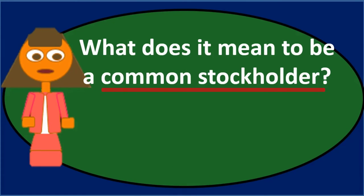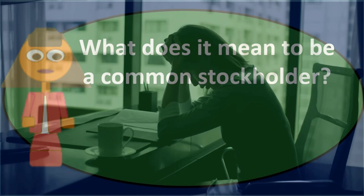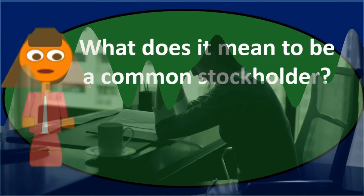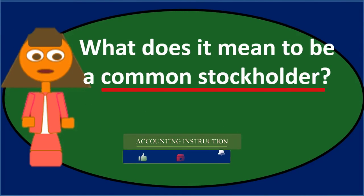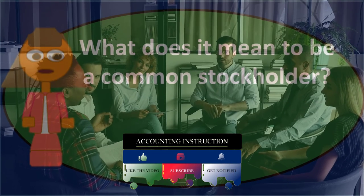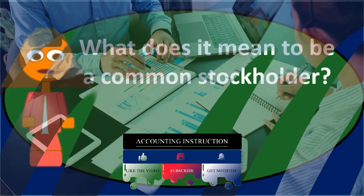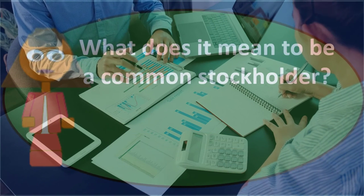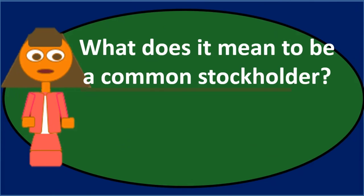We also have rights in terms of liquidation. If the corporation closes for whatever reason, we don't have much control if we don't have much stock. We can give influence through voting, but if the board of directors and management decide to liquidate the company, we have the right to an equal distribution after they sell the assets and pay off the liabilities.